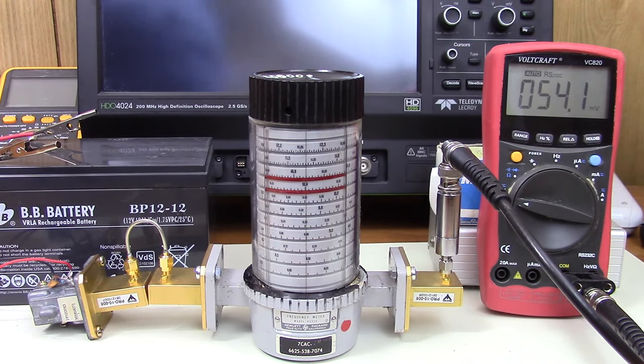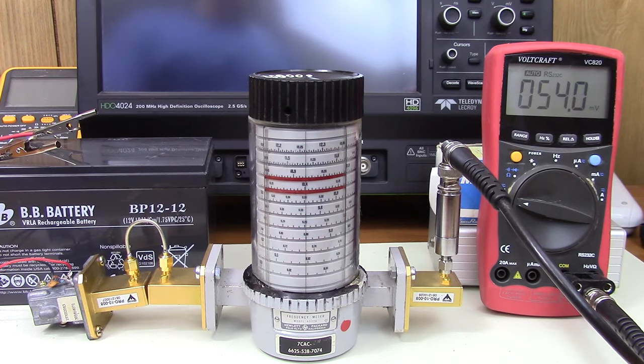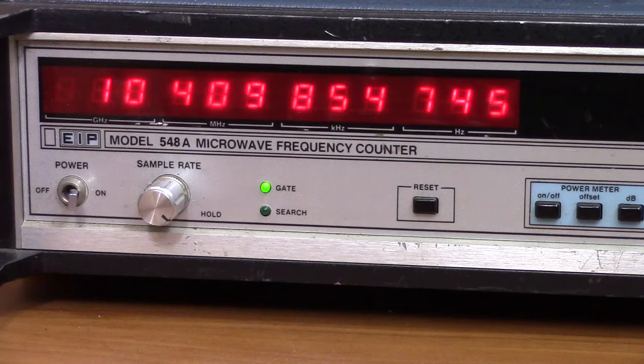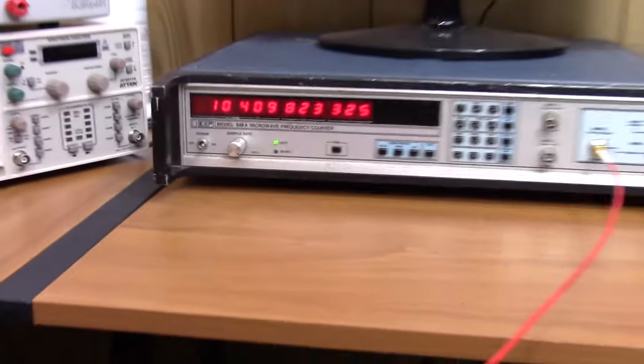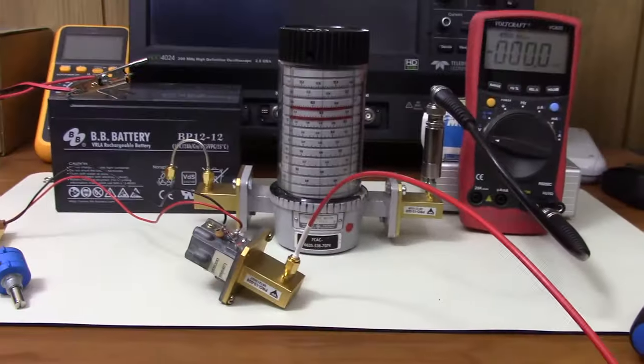So our frequency is 10.4 gigahertz. It's that easy. That's the unknown frequency this gun plexer is currently tuned to. Now I know what you're saying, you want me to prove this. Here you go, the EIP 548A microwave counter is showing just slightly above 10.4 gigahertz, exactly what we measured.